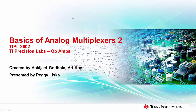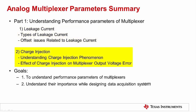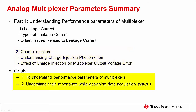Hello, and welcome to the TI Precision Lab series on basics of analog multiplexers. In the first part of this series, we discussed two important parameters of the MUX: on resistance and on capacitance. This video will provide an overview of the other two performance parameters of multiplexers, which are leakage current and charge injection. The goal of this series is to understand the DC performance parameters of multiplexers and how they affect data acquisition system performance, including understanding error sources.